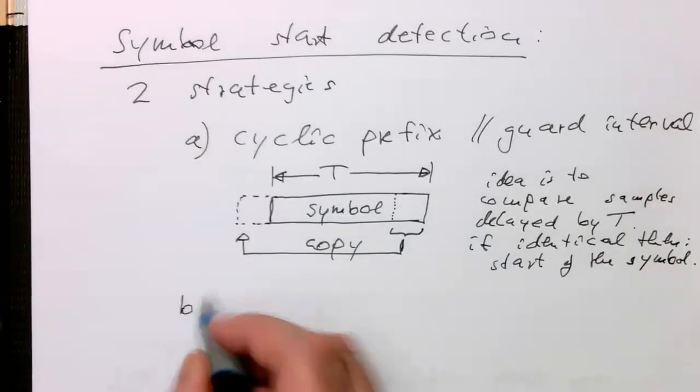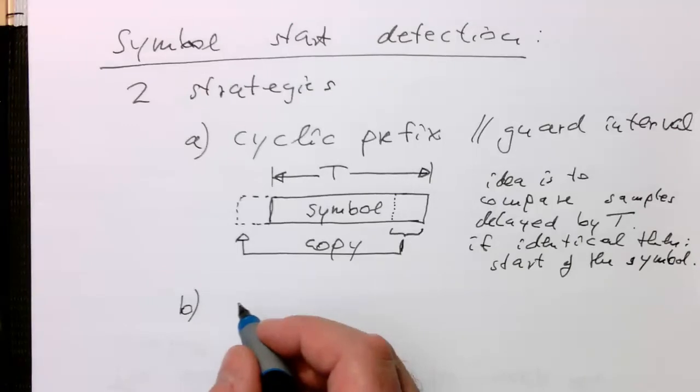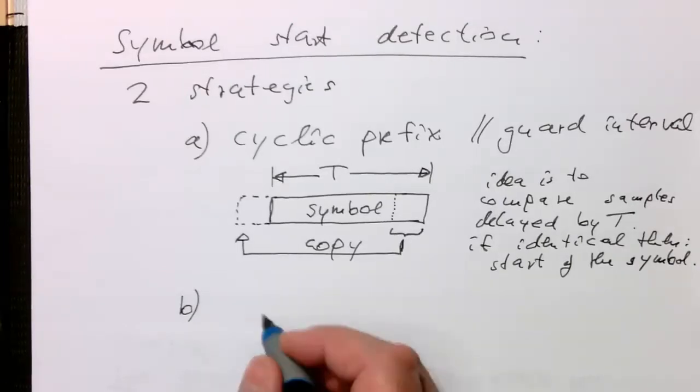And the second one, B, is a bit tougher to understand or a bit harder. These are so-called pilot tones.